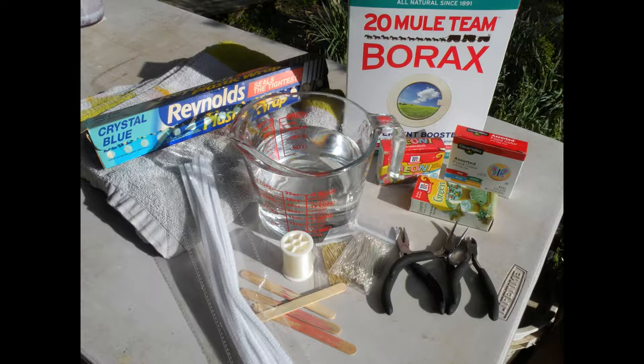Optional items that you may want are either a tablespoon to measure with, food coloring, eye pins, as well as some sort of pliers and wire cutters.